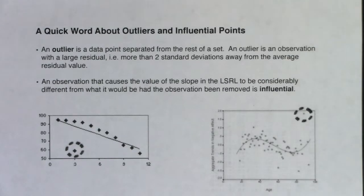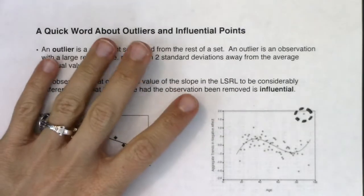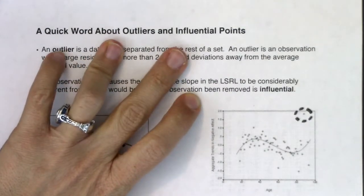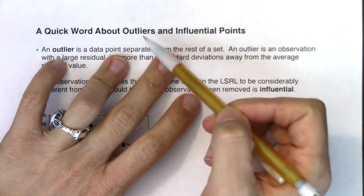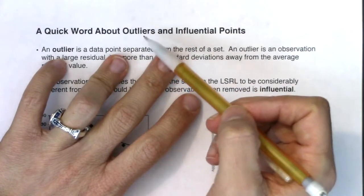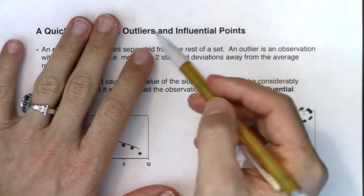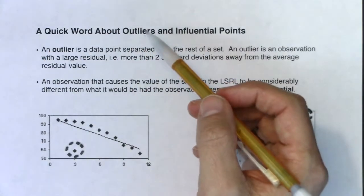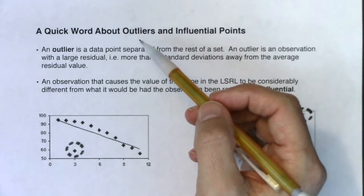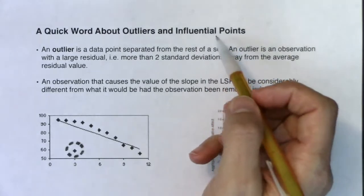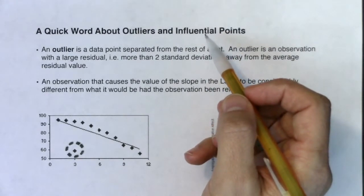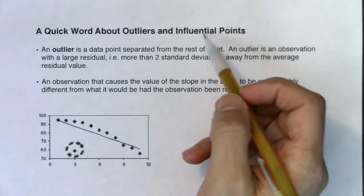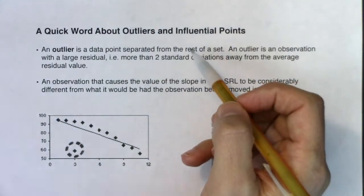One last topic in this chapter is how we go about identifying outliers and influential points. For outliers, we'll have a number to crunch — not one and a half times the IQR like in chapter two, but something to solidify whether a data point is an outlier or not. For influential points, I'm not going to get as technical; I just want to give some theory and look at a few examples.